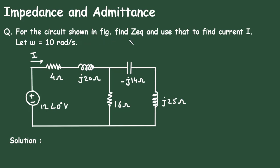For the circuit shown in figure, find Zeq and use that to find current i. Let ω is equal to 10 radian per second.